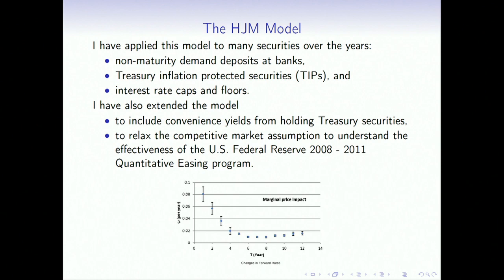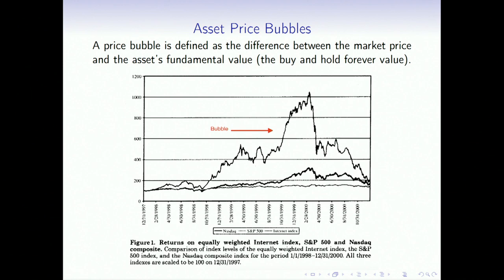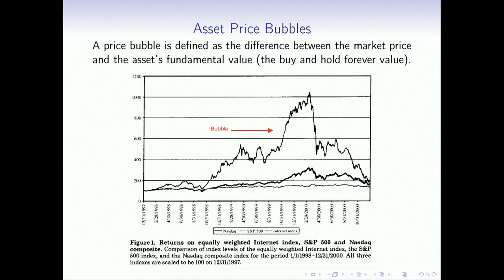When volatilities are not constant, crazy things can happen in arbitrage-free models. One is an asset price bubble. There's what I believe was a bubble — the alleged internet bubble between 1998 and 2000, though technically let's put a question mark there.